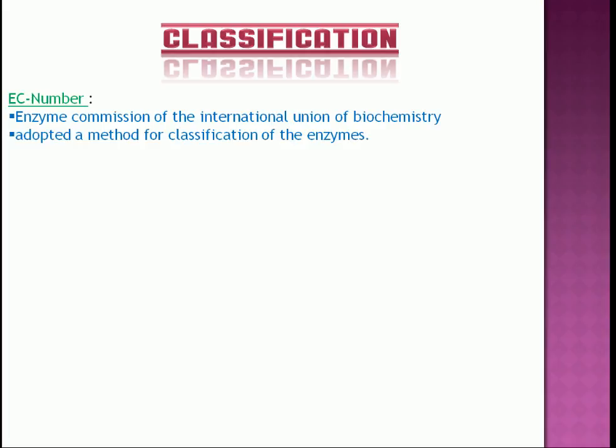Classification. Before classification, we are going to discuss the enzyme commission number. Enzyme commission of the International Union of Biochemistry adopted a method for classification of the enzymes. According to the system, six classes of enzymes catalyzing six major types of reactions.